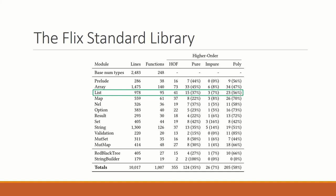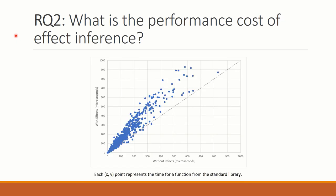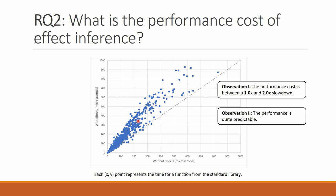Turning to the second research question, we consider what is the performance cost of effect inference? So this scatter plot here shows the running time of type inference with and without effect inference. Looking at the graph, we can make some observations. First, we can see that there is a performance cost, a slowdown of between 1x and 2x. The points that are near the y equals x line means that there is no overhead, and the points that are up here show that there is some overhead, maybe up to a factor 2. Second, we can see that the performance is quite predictable. So there is indeed an overhead, but we don't have points lying all the way up here or further outside the graph. All the data points are shown in the graph. So in summary, this graph suggests that there is an average performance cost of around 1.4x.